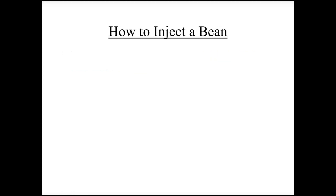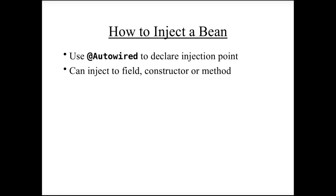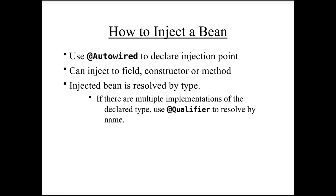To inject a bean into another bean, we use @Autowired to declare an injection point — placed on a field, constructor, or method. The bean is resolved by type, meaning by class name or interface name. If there are multiple implementations of a declared interface type, we can use the @Qualifier annotation to resolve by name instead.